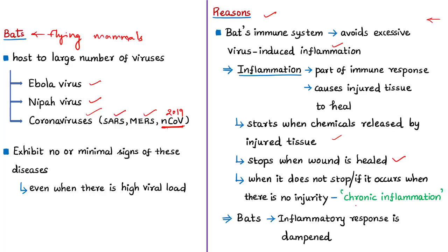Sometimes the inflammatory process may begin even if there is no injury, and sometimes it does not end even after healing, leading to chronic inflammation. Uncontrolled acute inflammation may become chronic and contributes to a variety of chronic inflammatory diseases in animals and humans infected with viruses. However, the inflammatory response in bats is dampened — a reduced response — immaterial of the variety of viruses present or the viral load.